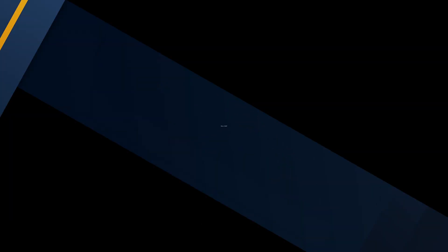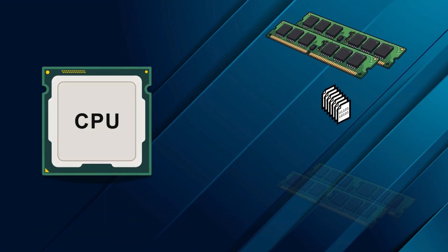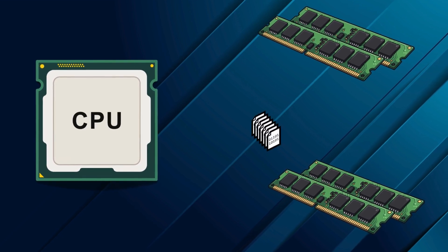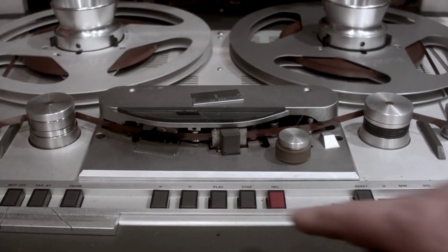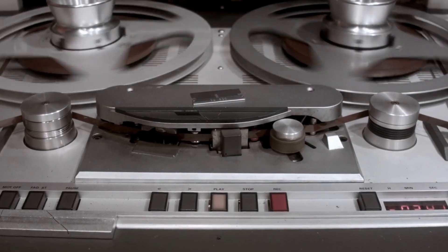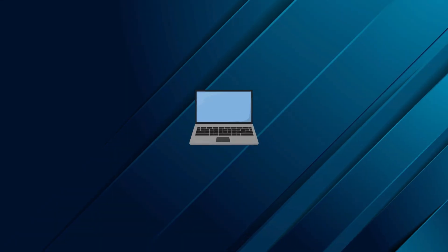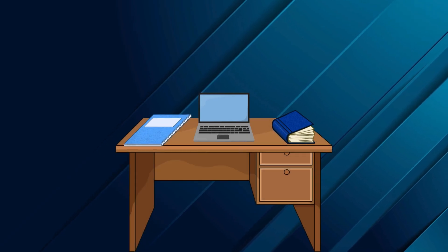So what is RAM? RAM stands for Random Access Memory. The random access part is key — it means your computer's CPU can access any piece of data stored in it, in any order, almost instantly. This is the opposite of sequential memory, like an old tape, where you'd have to fast forward to get to the data you need. RAM is a type of volatile memory, meaning it only holds data temporarily while your computer is powered on. Think of it like your personal workspace or your desk — the larger it is, the more tools and projects you can keep open and ready.